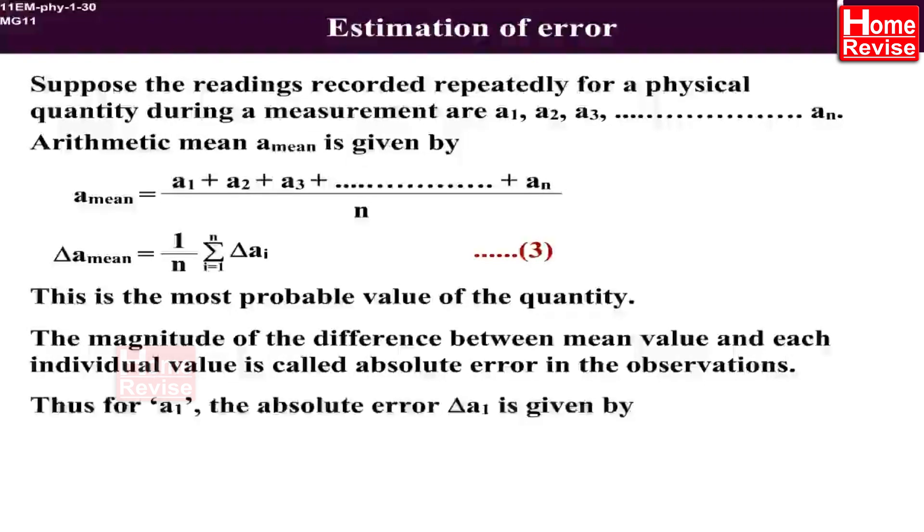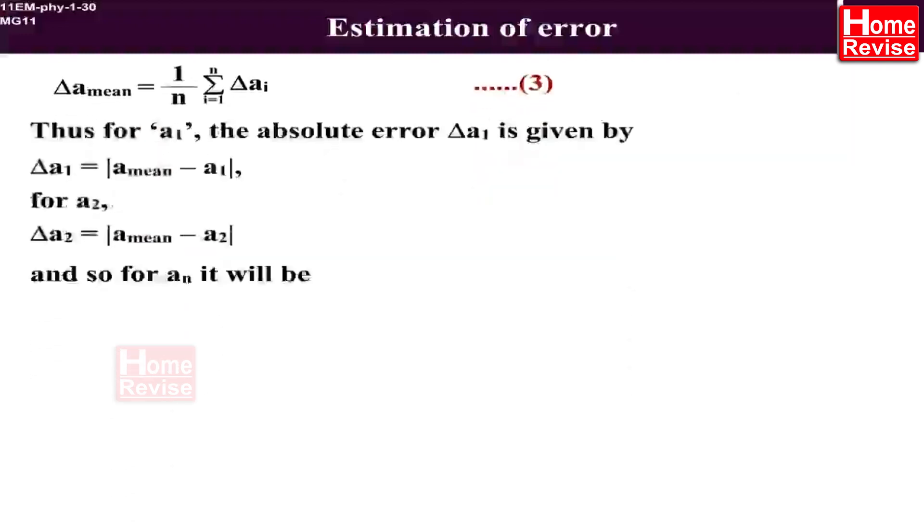the absolute error ΔA1 is given by ΔA1 is equal to mod of A_mean minus A1. For A2, ΔA2 is equal to mod of A_mean minus A2, and so on.